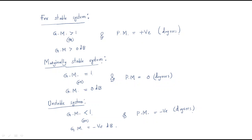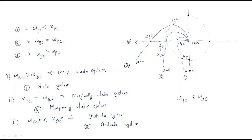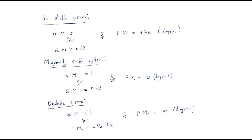Stability analysis of Bode plots is done by two methods: one using gain crossover frequency and phase crossover frequency, and the second using gain margin and phase margin. I hope all of you understood the session. Thank you.